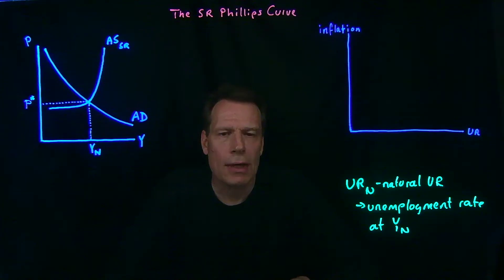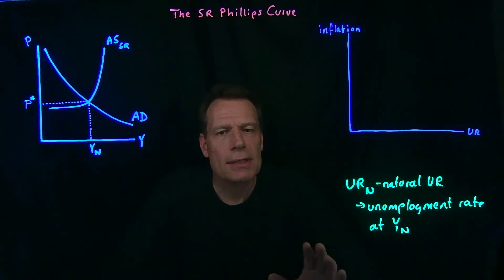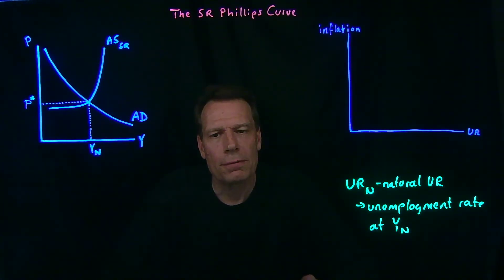Now, the level of that unemployment rate, the natural unemployment rate, depends on lots of factors. It depends on labor laws. How hard is it to hire a new worker? It depends on the generosity of unemployment benefits. The more generous unemployment benefits are, the longer people might take to find that next new job. Because in the meantime, they're covered by unemployment insurance.